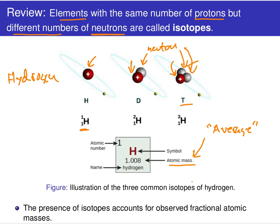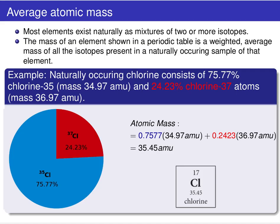So this atomic mass is an average — an average of all those isotopes. The number of isotopes can vary, but typically elements are going to have two or more isotopes. Two and three isotopes are very common.